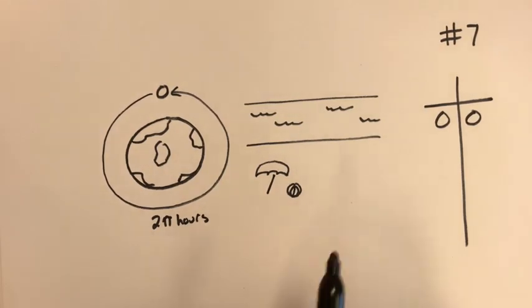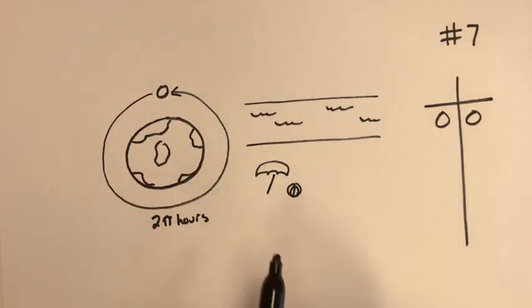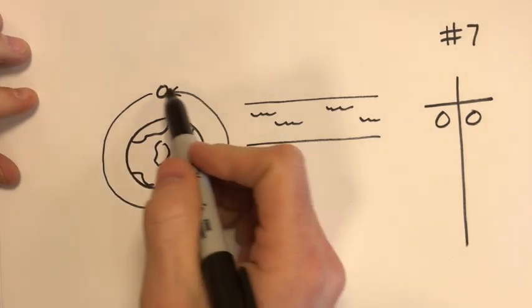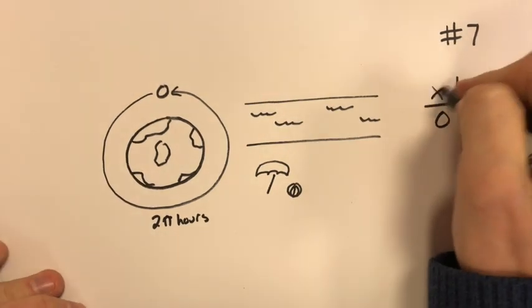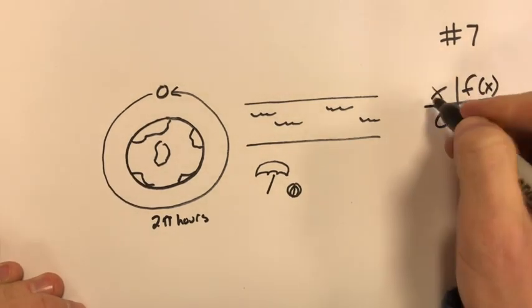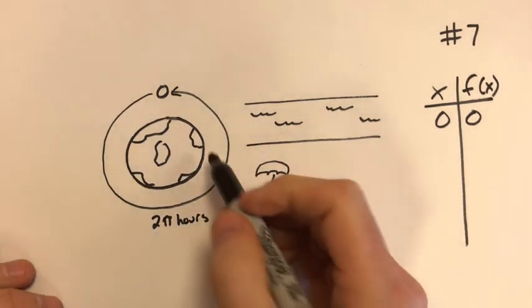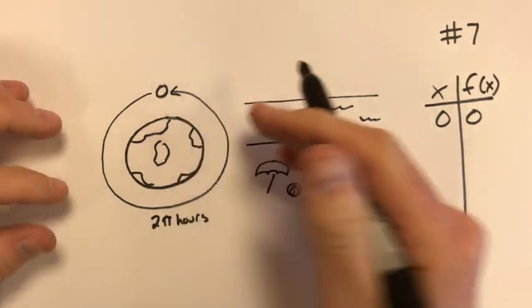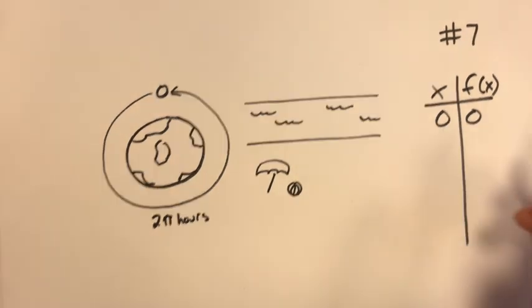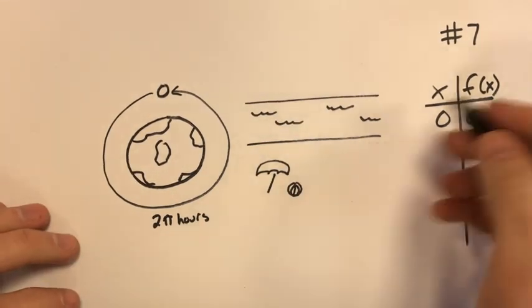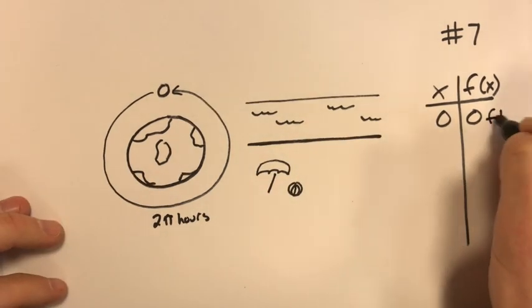In this example we have an alien planet with an alien moon that takes exactly two pi hours to rotate around the planet. Imagine that. We're going to measure x in time in earth hours, and it takes two pi earth hours to get around. So the moon, as we know, is one of the main things that governs how high the tide is. On this particular day we start the timer, and right at the beginning the tide level is zero feet.